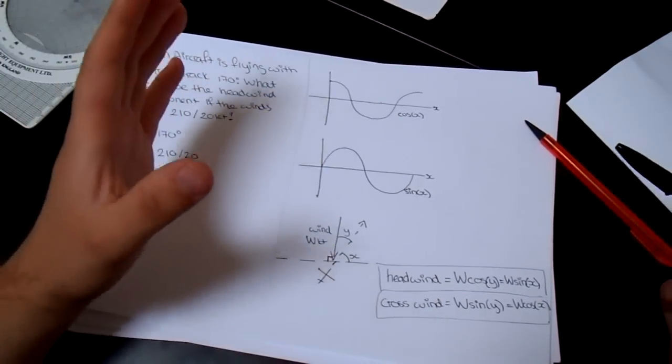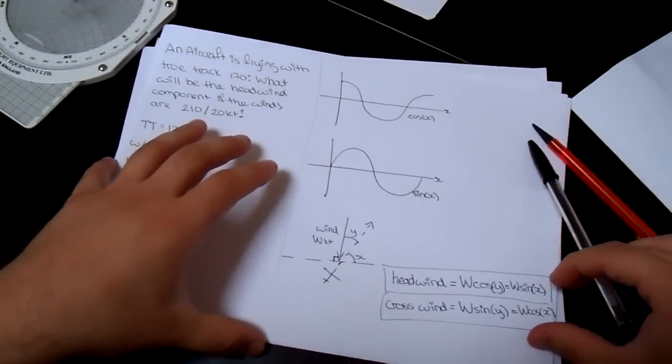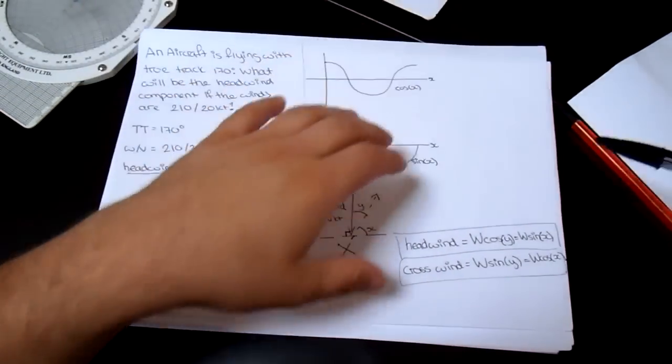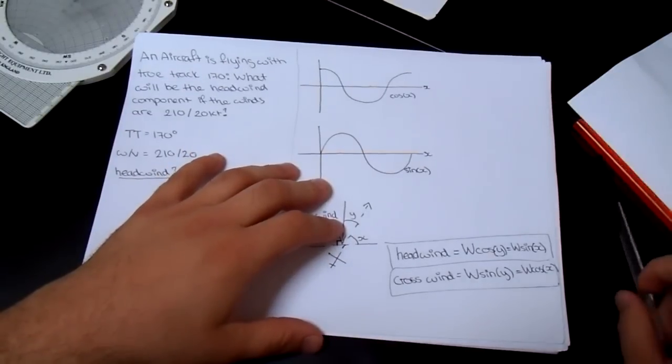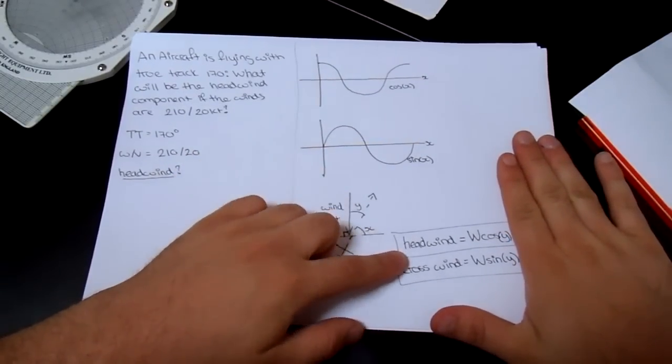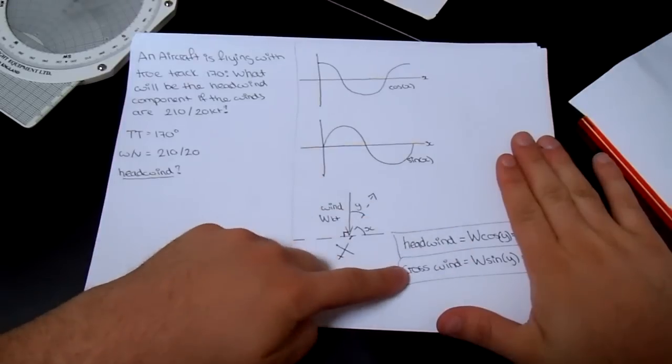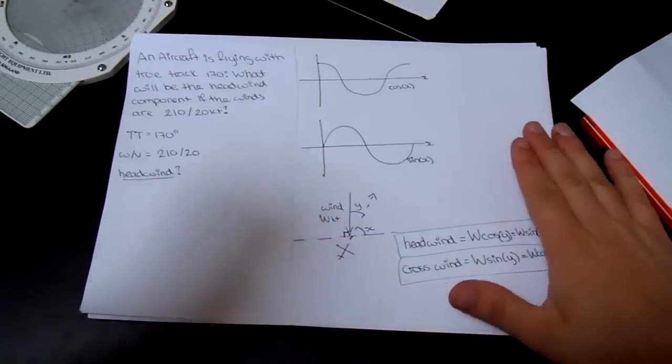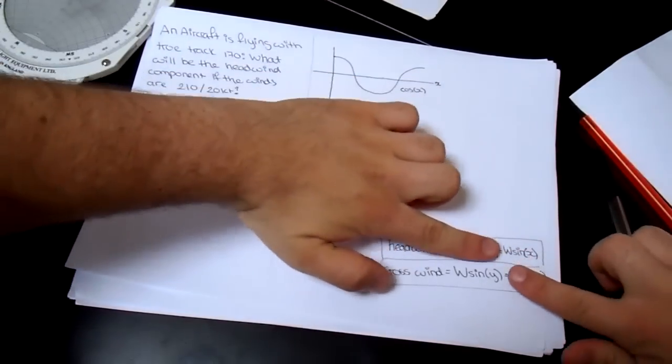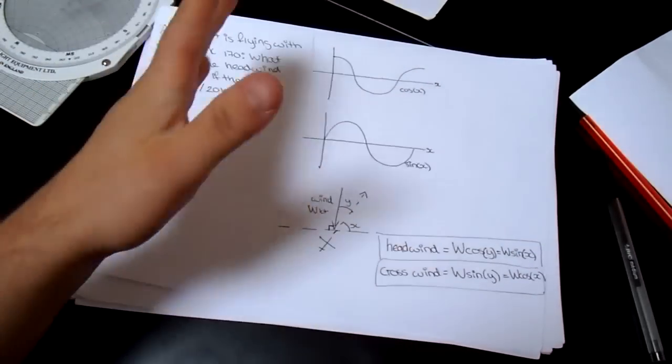So therefore, with this simple sort of logic in mathematics, we come up with these expressions. You can either remember it as this way, headwind equals W cos Y, or crosswind equals W sine Y. You can learn it this way, you can learn it this way, you can learn it this way, you can learn it however you want. Just jot it down and look at the one you prefer.